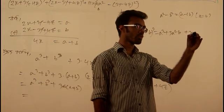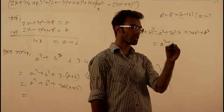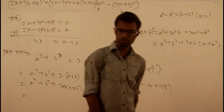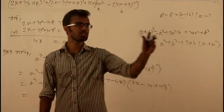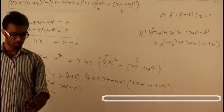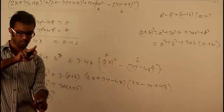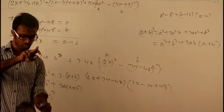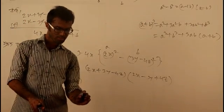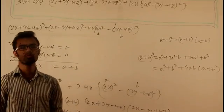3a minus 4z cube. 3a minus 4z cube plus 12x square. 4x cube plus 12x square.